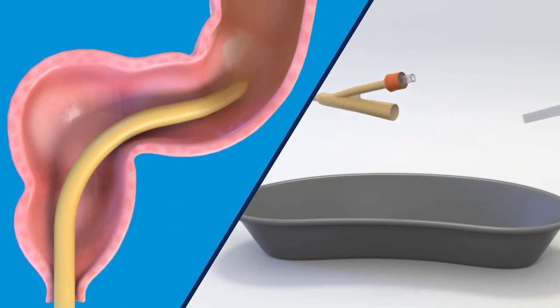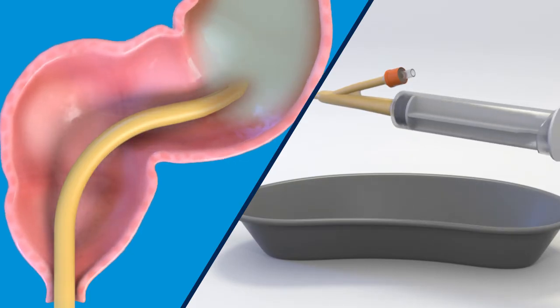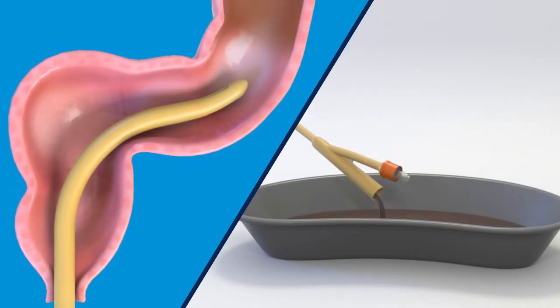Connect the syringe to the catheter and inject the 10 to 20 milliliters of saline. Disconnect the syringe and let the saline and any stool drain into the empty basin.